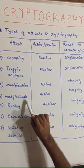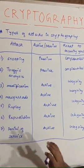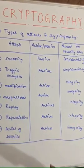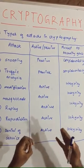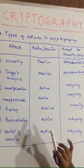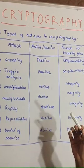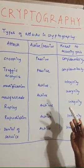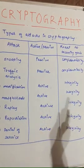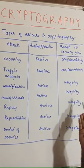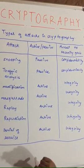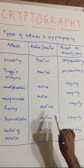Another attack is masquerading. In masquerading, the intruder tries to gain as much privileged access to the system or computer as possible — essentially unauthorized access. It is also an active attack and a threat to security goals.